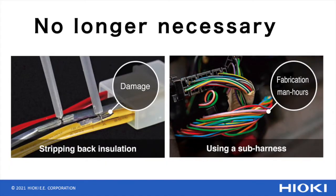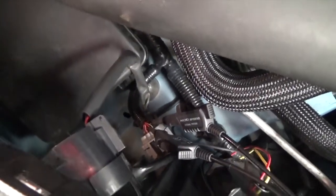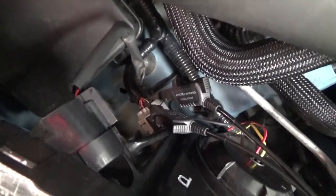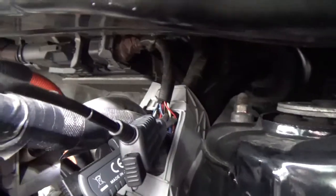It completely eliminates the need for conventional methods like stripping insulation or crafting a sub-harness. CAN bus signals can be acquired more easily and safely than ever. The inside of a vehicle has many intricate parts, and the slim probe is designed to attach easily onto odd places throughout the harness.